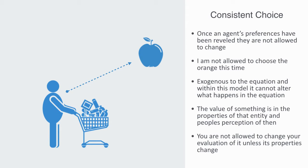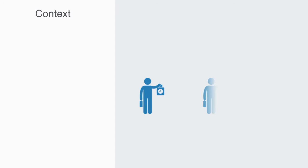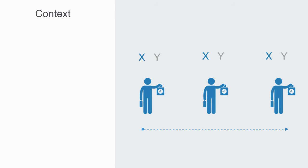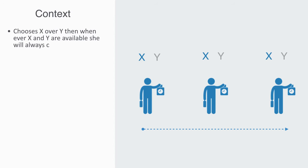If you suddenly notice that the apple has a little blemish on it, then its properties have changed, and you can change your evaluation of it and choose another option — that's considered rational. Put more formally, if an agent chooses x over y, then whenever x and y are available, she will always choose x over y. What this makes explicit is that the context cannot change the evaluation of things.